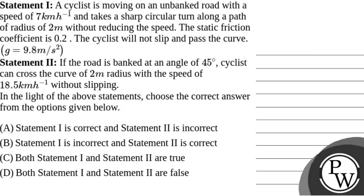Hello, let's read the question. The question says that a cyclist is moving on an unbanked road with a speed of 7 km per hour and takes a sharp circular turn along a path of radius 2 meters without reducing the speed. The static friction coefficient is 0.2. The cyclist will not slip and pass the curve. g equals 9.8 meters per second squared.